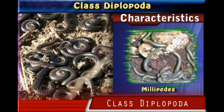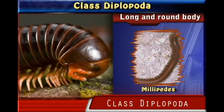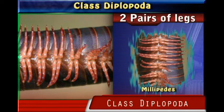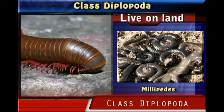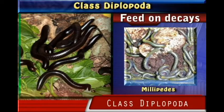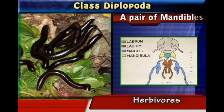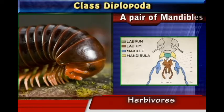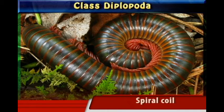Organisms in Class Diplopoda have the following characteristics: they have a long rounded body with many segments, and on each segment we find two pairs of legs. They live on land and feed on decayed matter. They have a pair of mandibles for chewing and they are herbivores, meaning that they feed on plants.